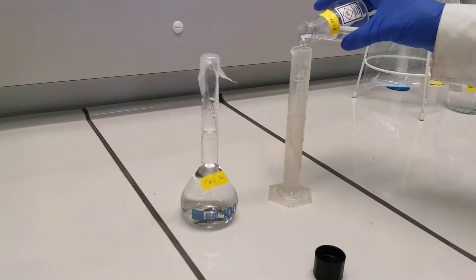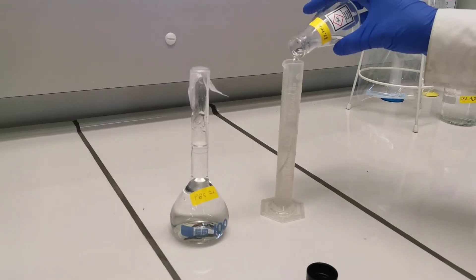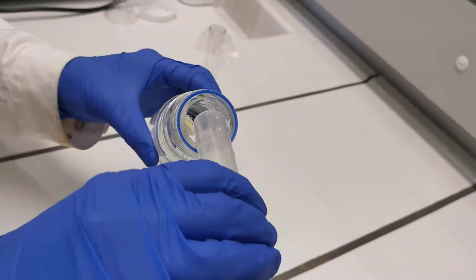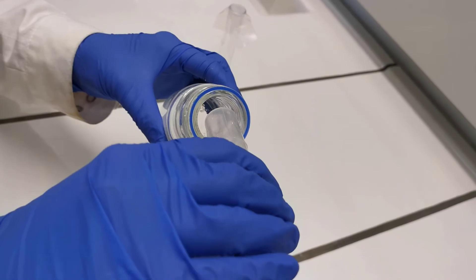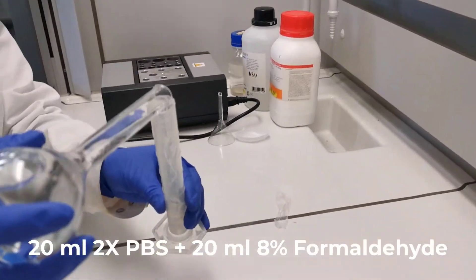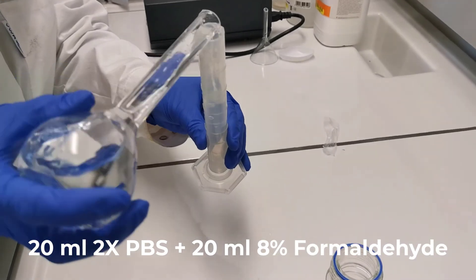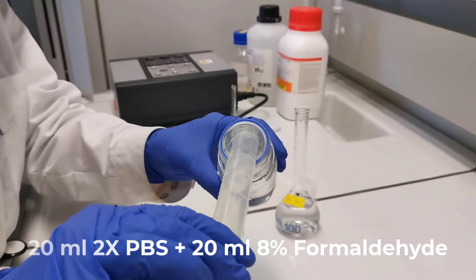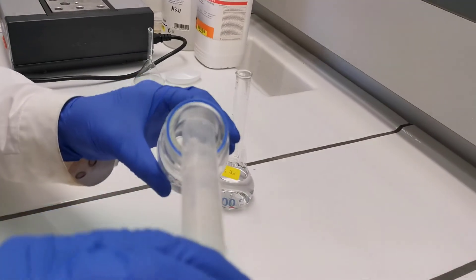Now we mix equal volume of 2x PBS and 8% formaldehyde to get a final of 4% formaldehyde. In this demonstration, we could mix 20 milliliters of each solution to get a final of 4% formaldehyde.